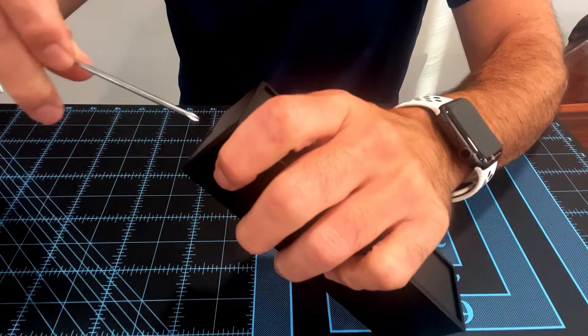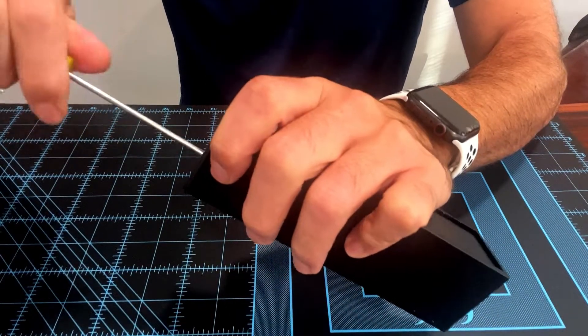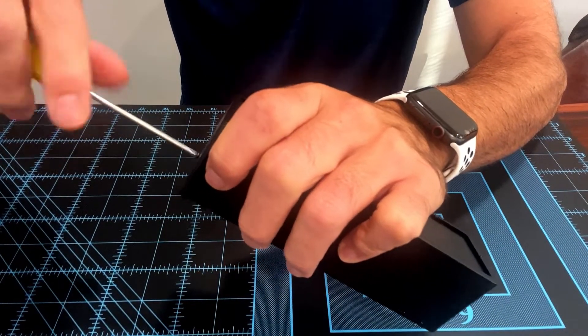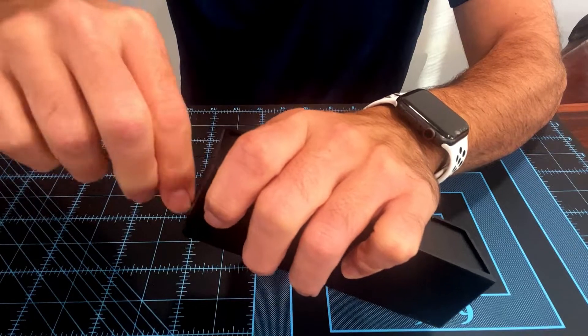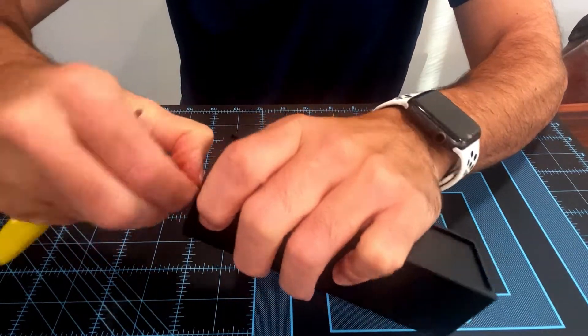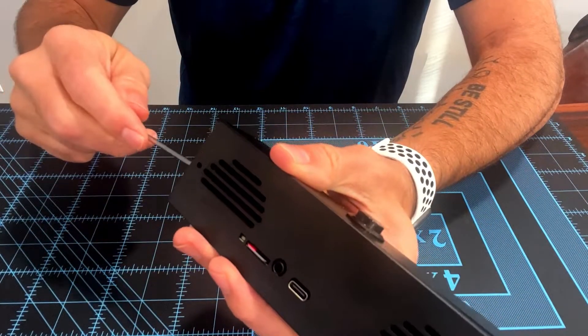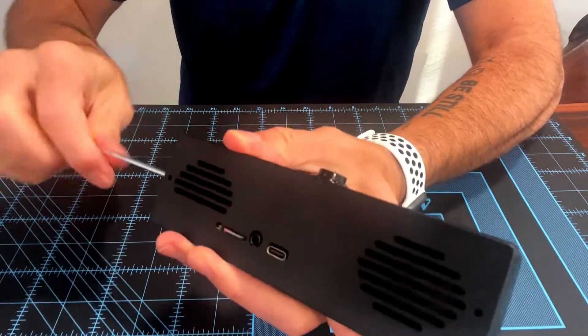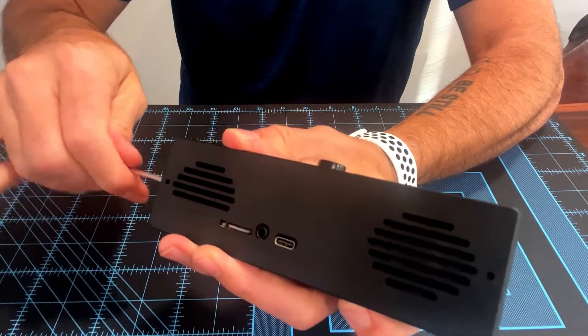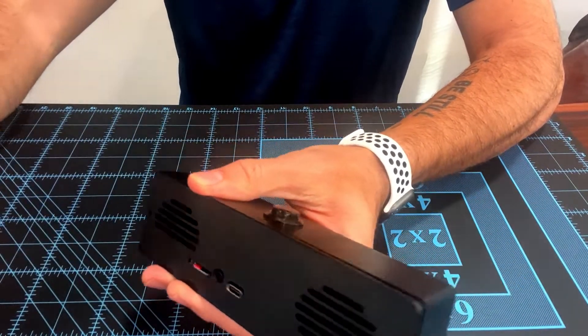These screws are tiny, so set them aside where you don't lose them. Once you have the two screws removed...